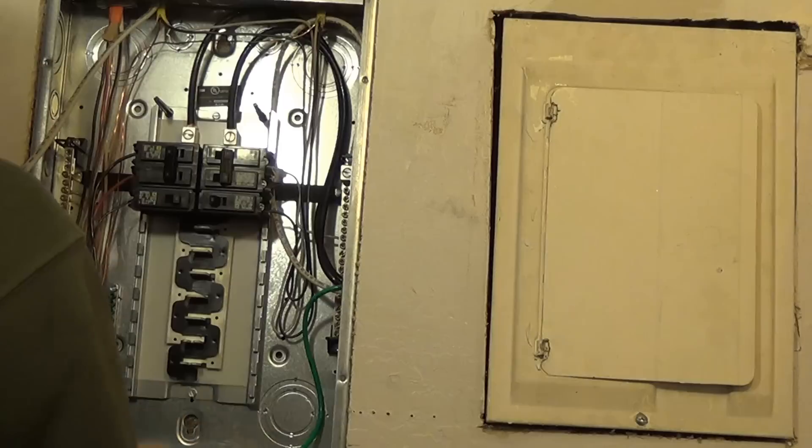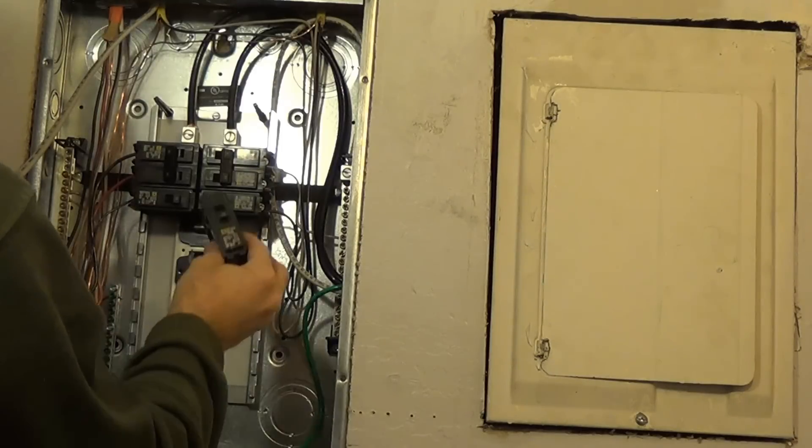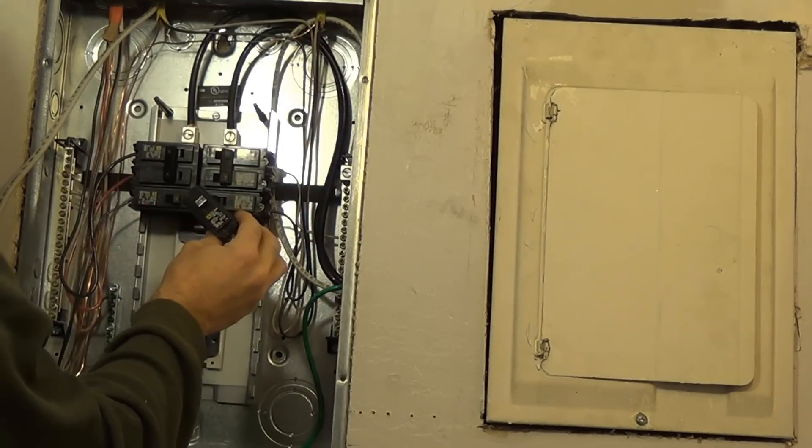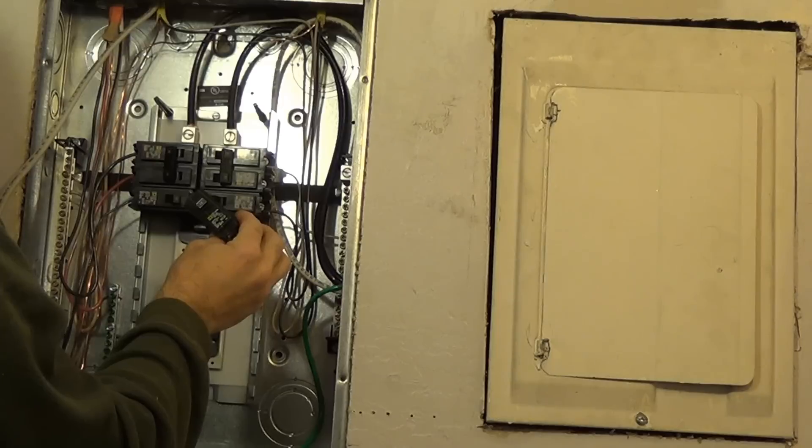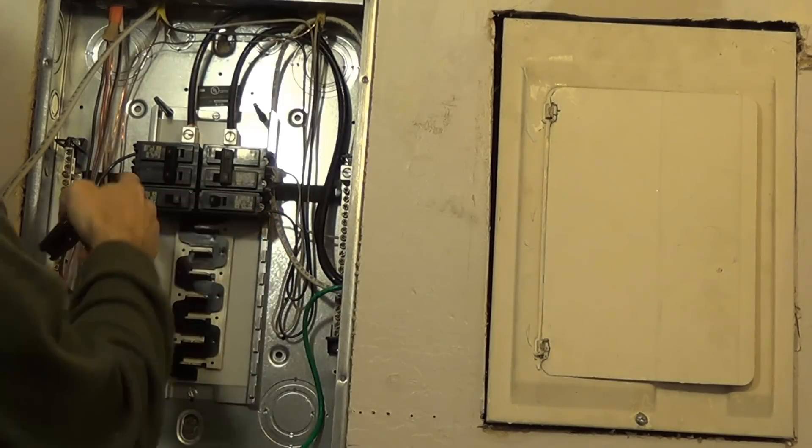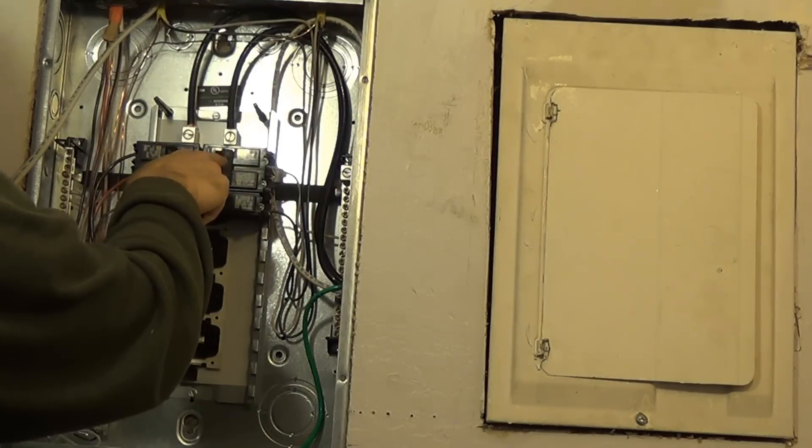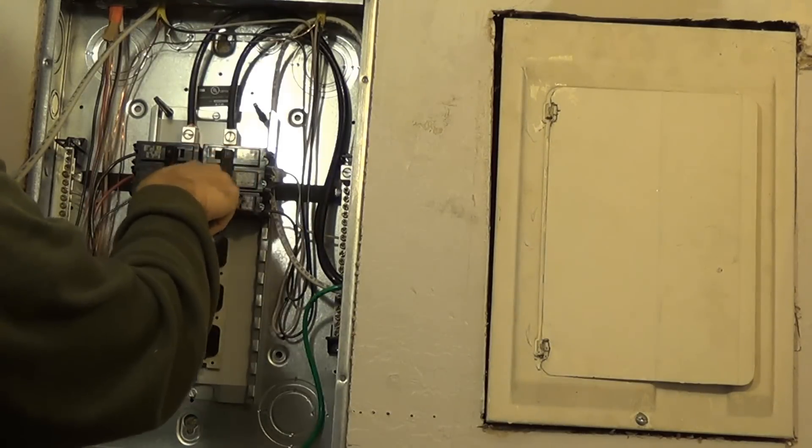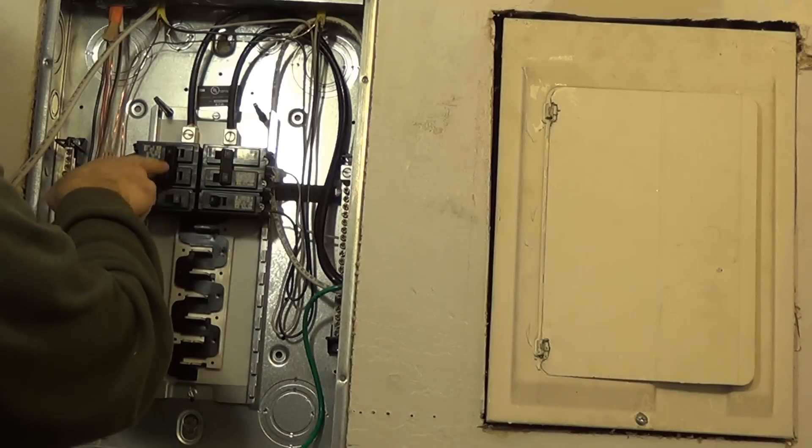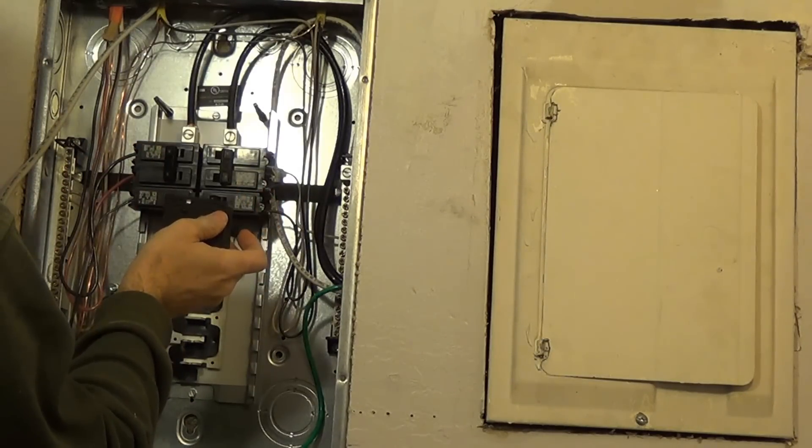Today I want to install a new breaker into this breaker box, and what I'm going to install is just a 120 volt 15 amp breaker. You can see what I already have in here: 15 amp, 20 amp, a double 240 volt 15 amp, and a 240 volt 30 amp. But this is just a simple 15 amp breaker.